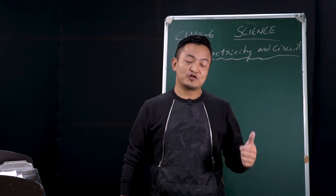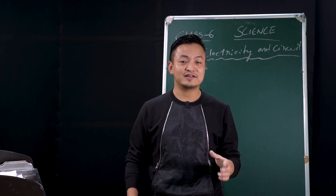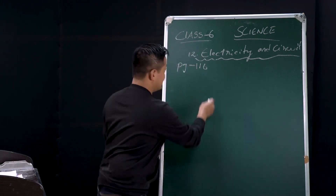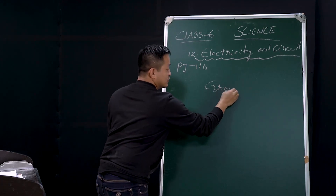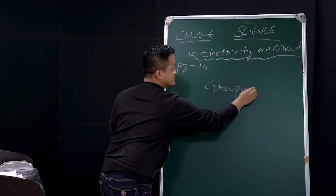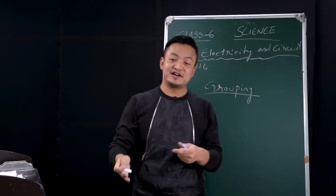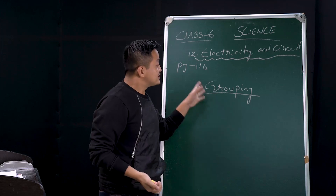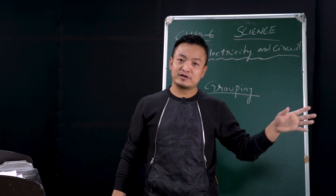Yesterday in our fourth chapter, Sorting Materials into Groups, we left one topic — the grouping part. We discussed objects and materials, and now this grouping topic is very important.